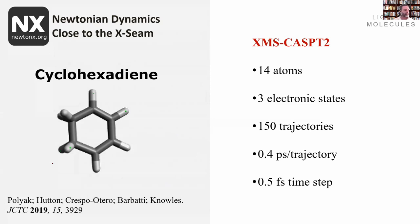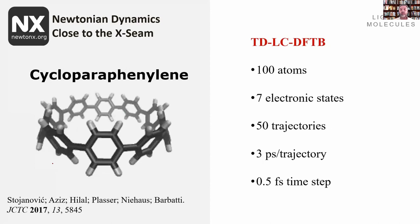To give a feeling of what's possible to do with Newton-X right now: you can go for a very high-level method like XMS-KSPT2 and do dynamics for a small molecule like cyclohexadiene with 14 atoms at half a picosecond per trajectory. On the other hand, you can take a large molecule of 100 atoms and do dynamics for three picoseconds using a low-accuracy method like TD-DFTB. You can do whatever you want in between these two limits.